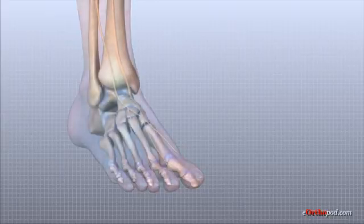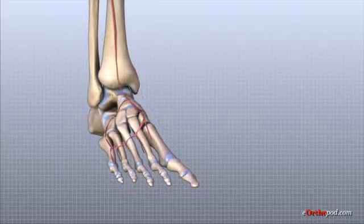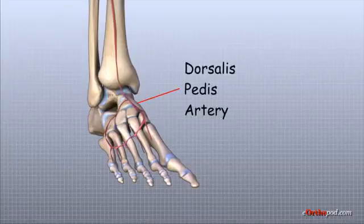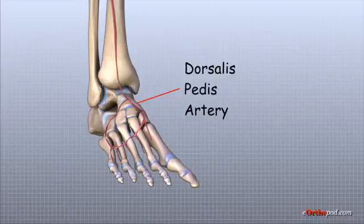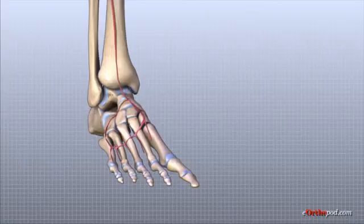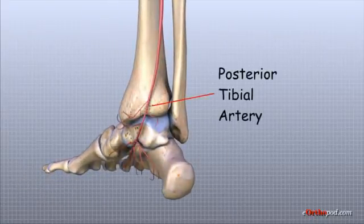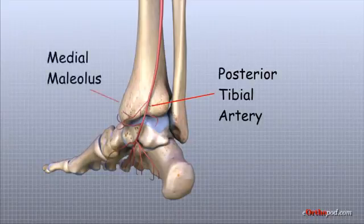The ankle gets blood supply from nearby arteries that pass by the ankle on their way to the foot. There are two main arteries that cross the ankle. The dorsalis pedis artery runs in front of the ankle to the top of the foot — you can feel the pulse where this artery runs in the middle of the top of the foot. Another large artery, the posterior tibial artery, runs behind the medial malleolus and sends smaller blood vessels to the inside edge of the ankle joint. You can feel the pulse where this artery runs behind the medial malleolus.